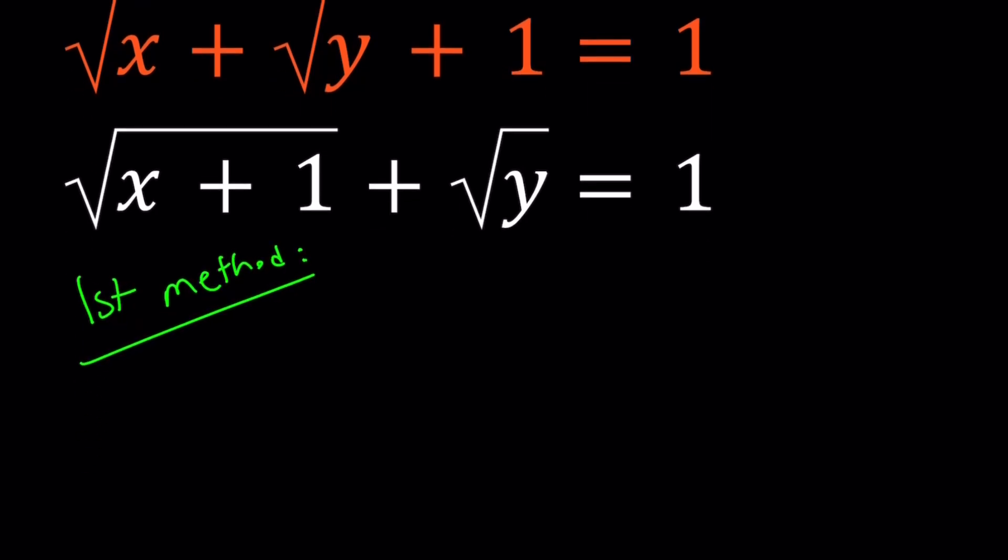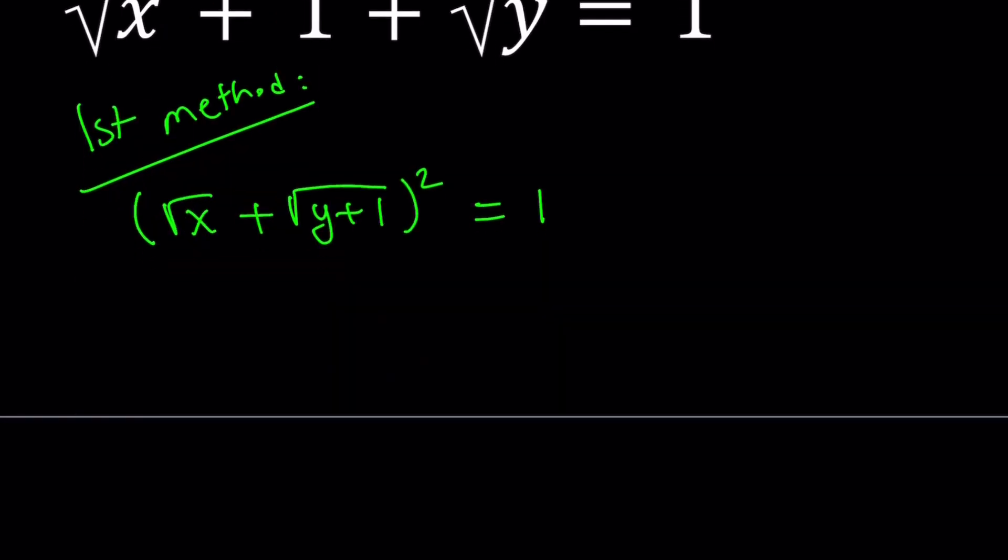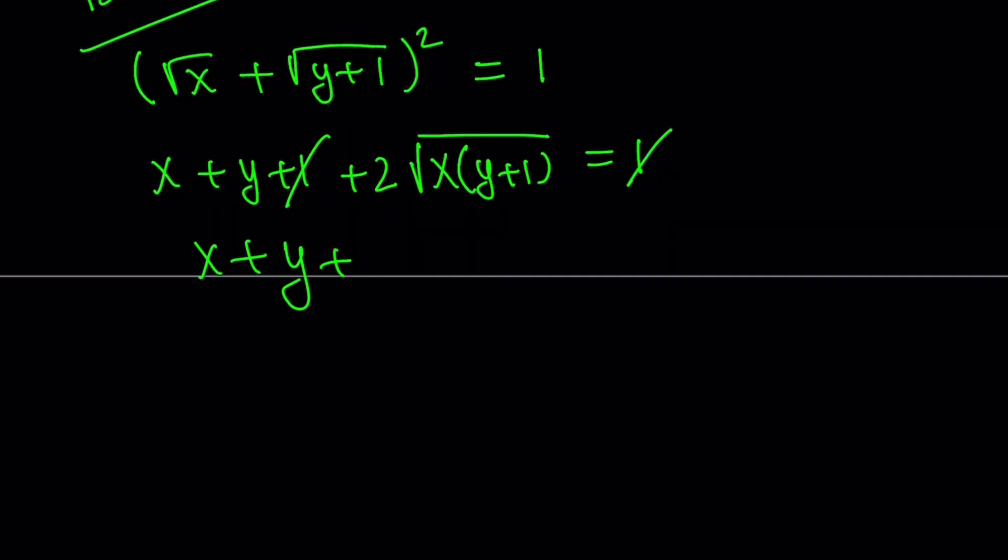For my first method I'm going to do the obvious. I'll square both sides. When I square both sides in the first equation, I get 1 again. Let's call it an expanded. A plus B quantity squared, so this is going to give me x, y plus 1, and 2 times x times y plus 1 under the radical. And this equals 1. 1 cancels out, leaving us with x plus y plus 2 times the quantity x times y plus 1, square root of that equals 0.